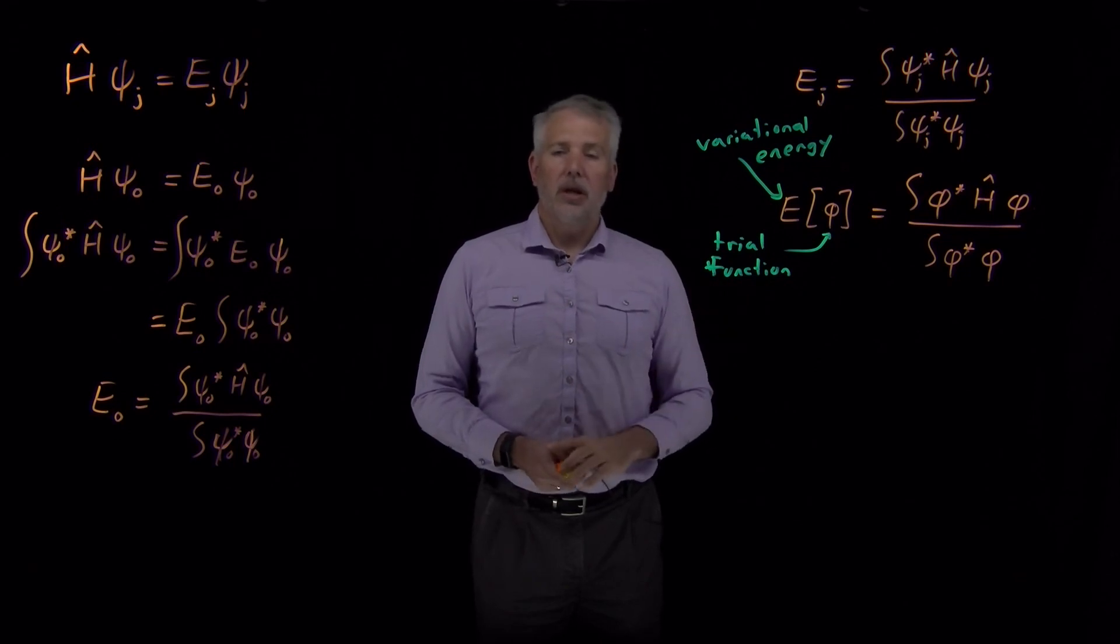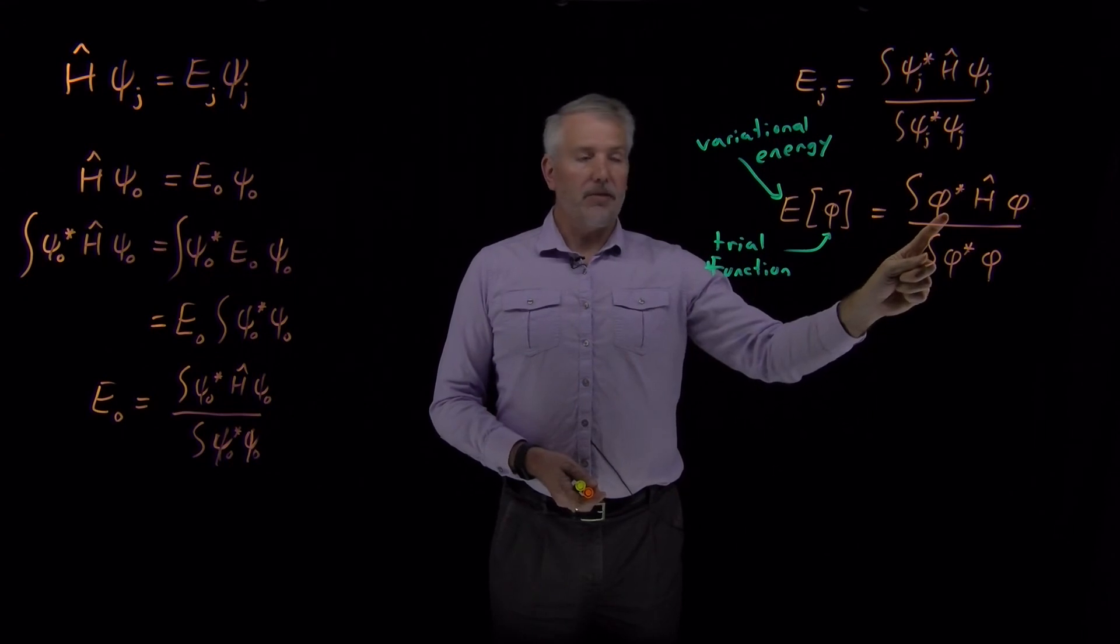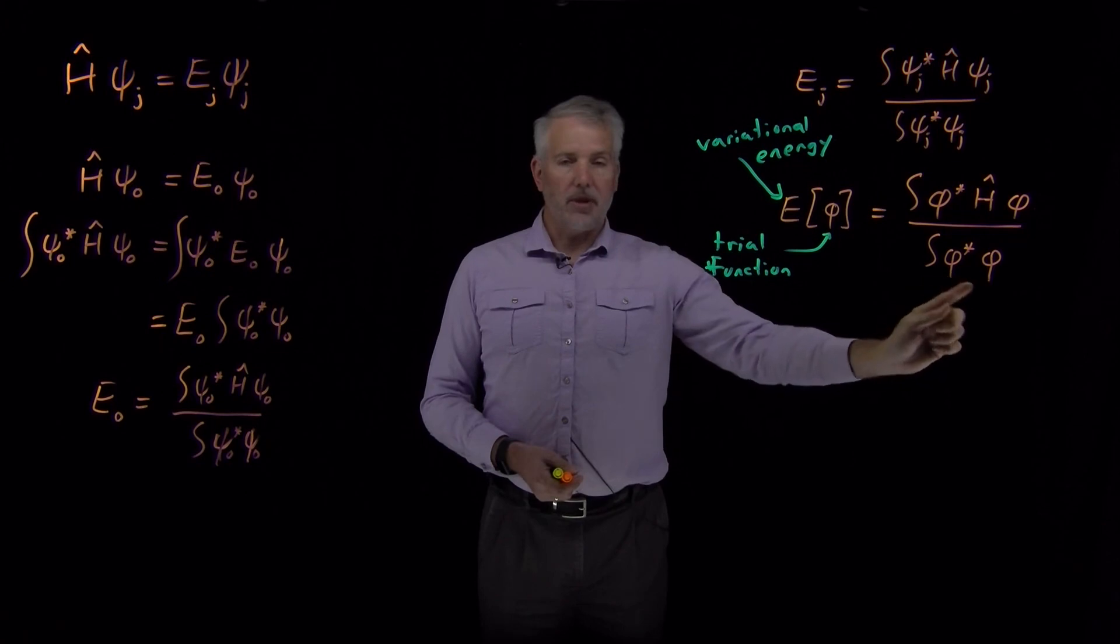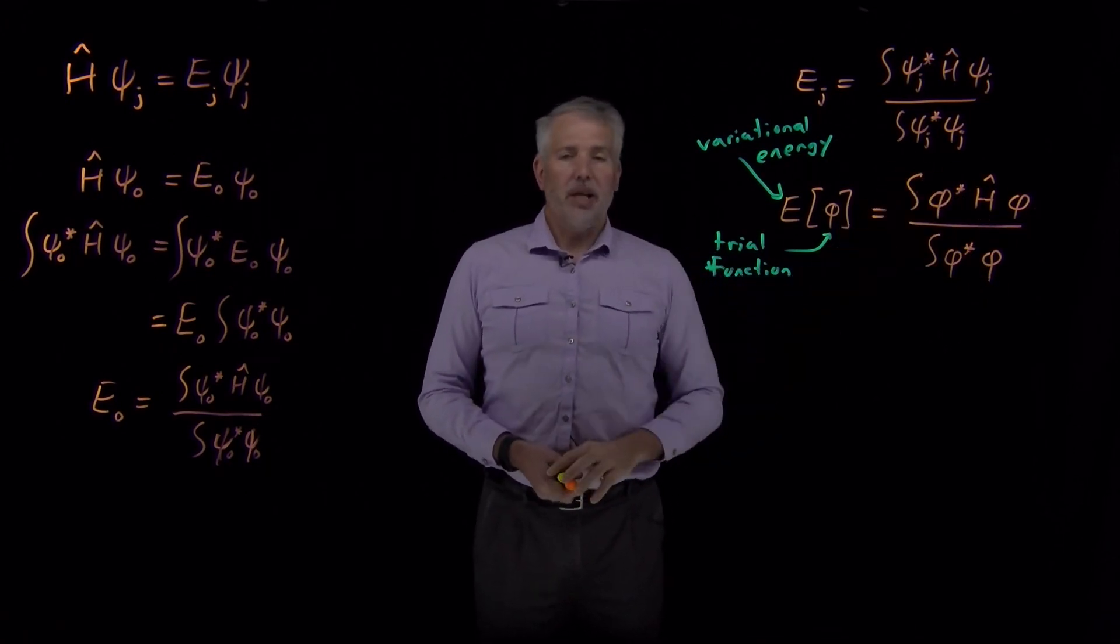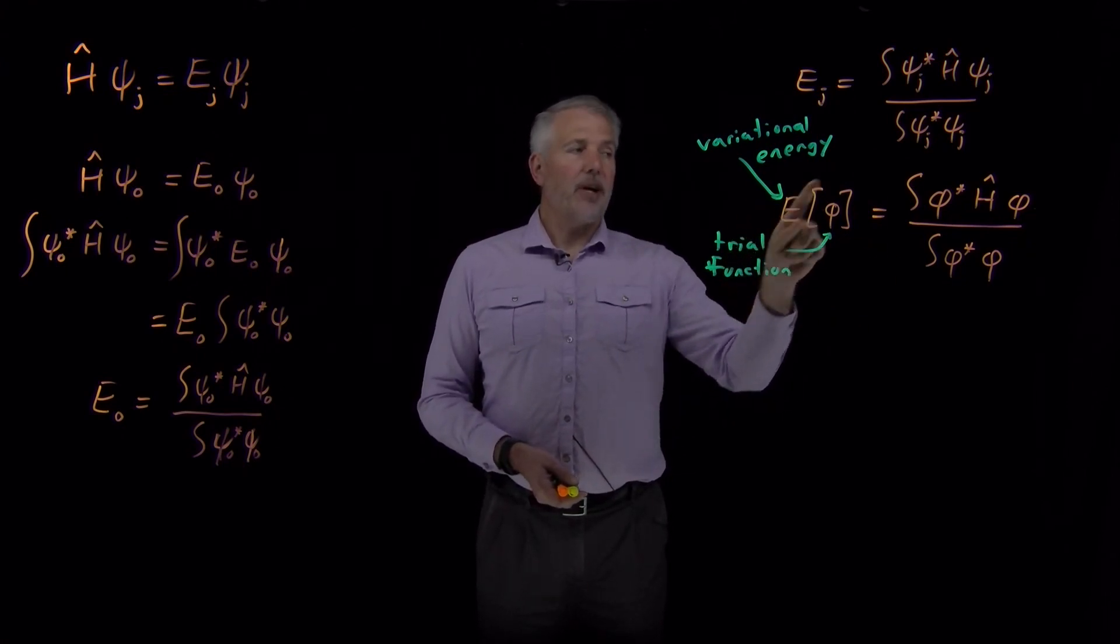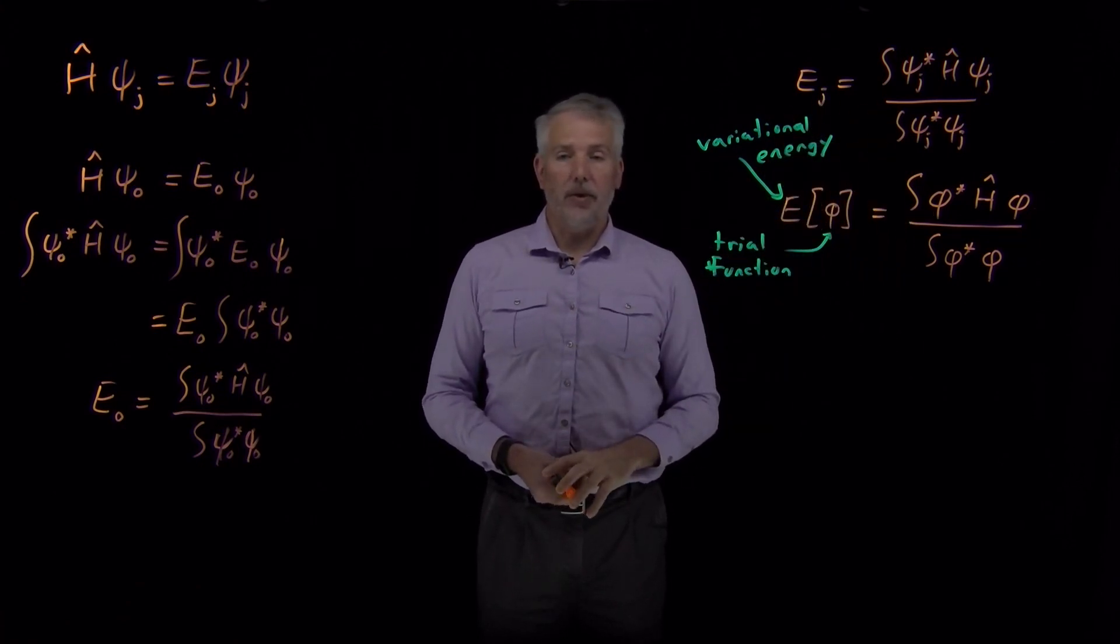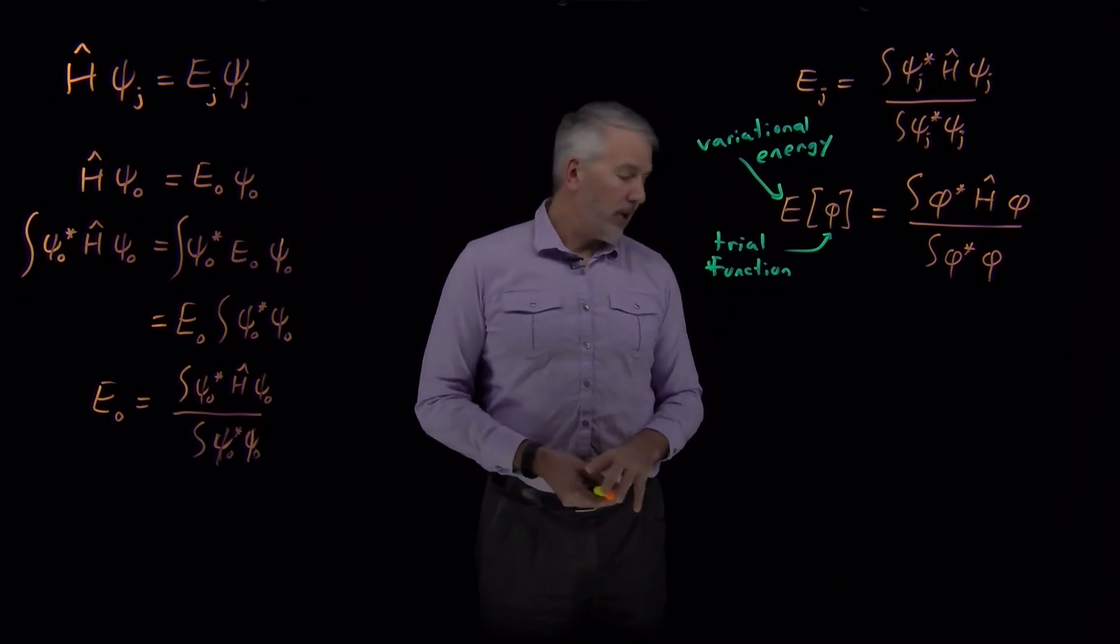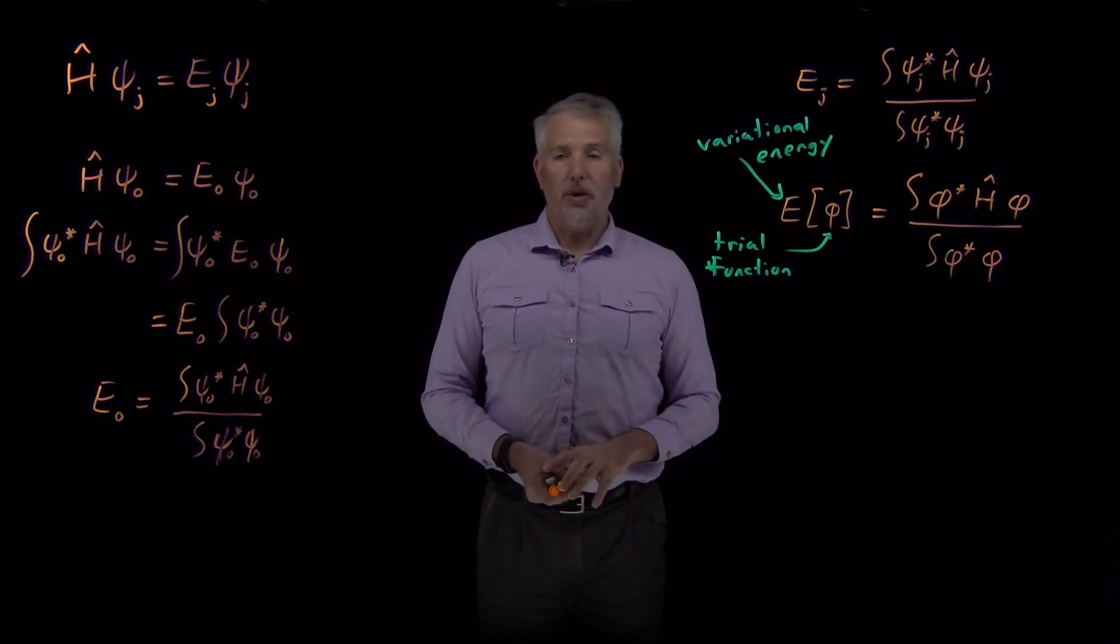But the variational energy is just an expression for finding a quantity that we're naming the energy for any function that we want. Notice even if we don't know whether it's a wave function or not, I can take derivatives of a function, I can multiply by itself, I can integrate it, I can divide by another integral. The function doesn't have to be normalized because I'm doing this integral in the denominator. If I perform this somewhat complicated procedure, what I get is some quantity that I can call the energy, and I'm calling it an energy because if I get lucky and plug in the actual true wave function, what I've discovered is the energy of that wave function. So this variational energy is going to be useful for us in trying to figure out the energy of problems where we don't know the exact wave function.